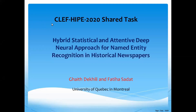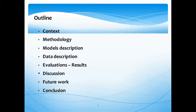Thank you very much everybody for your presence. Today I would like to briefly present our work as part of the CLEF Hipe Shared Task, done by myself and Professor Fatiha Sadeh, which is implementing a hybrid statistical and quantitative deep neural approach for named entity recognition in historical newspapers. I will start with presenting our methodology, model description, and data description, followed by evaluation of our results and a brief discussion.